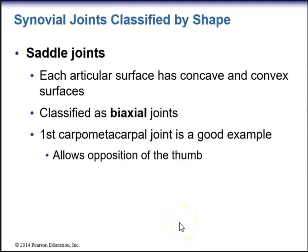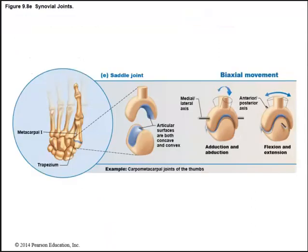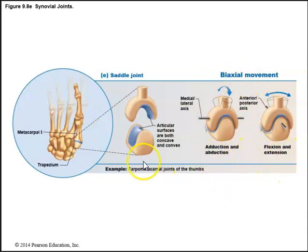Saddle joints have articular surfaces that are both concave and convex and are classified as biaxial, allowing movement around two axes. An example is the first carpometacarpal joint — the joint between the carpal bone and the first metacarpal — which allows opposition of the thumb. This joint allows both abduction/adduction and flexion/extension.